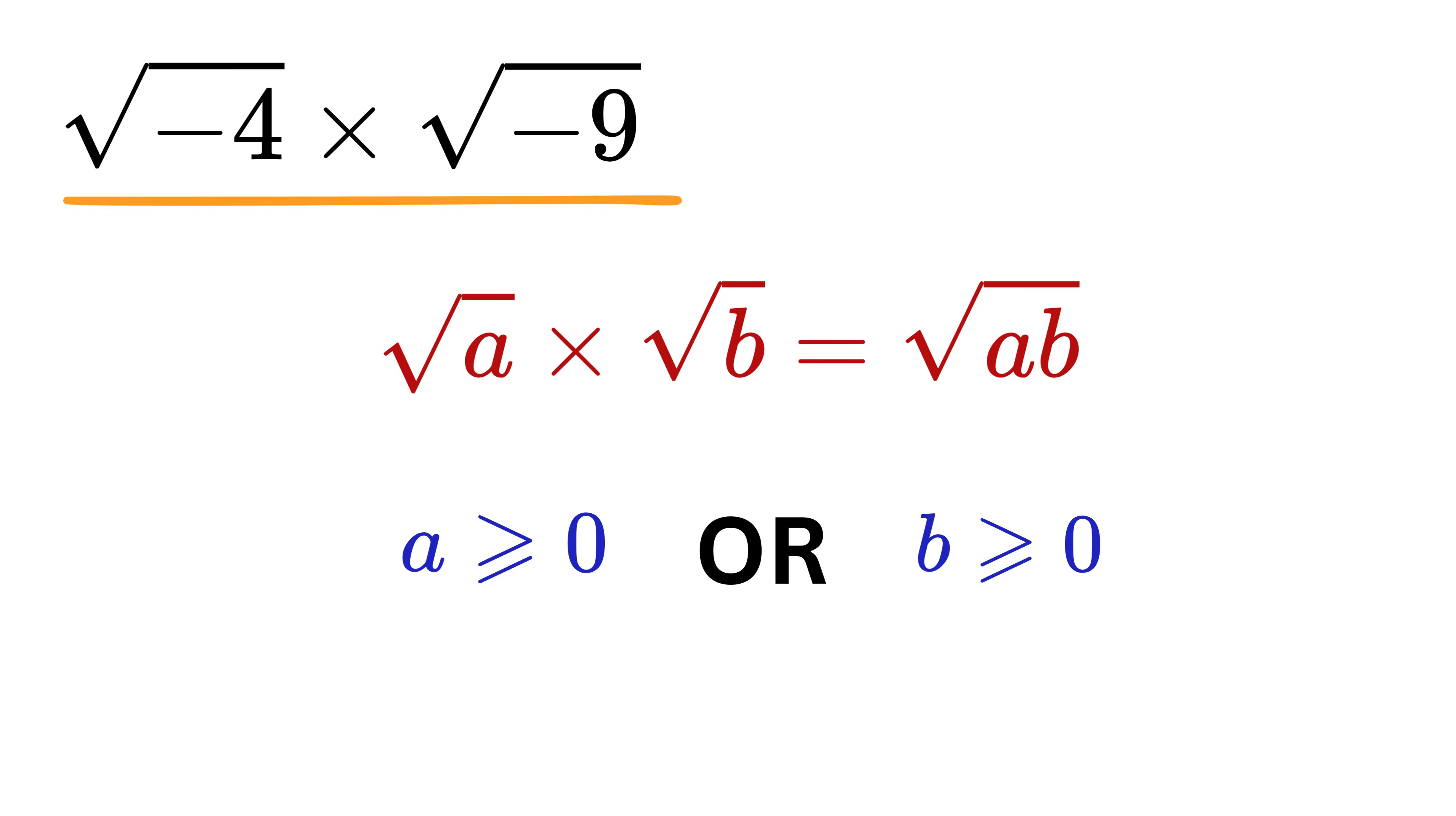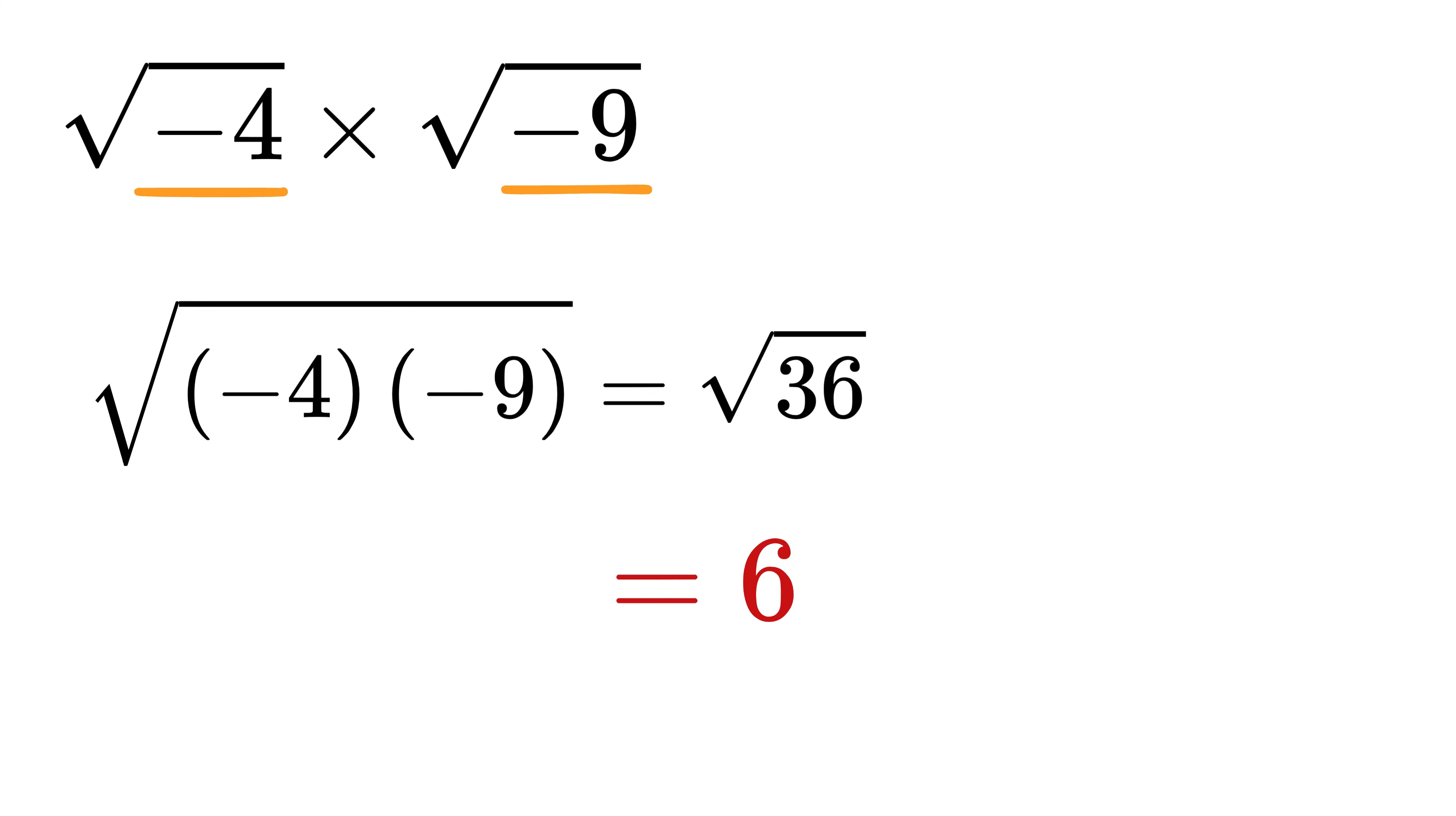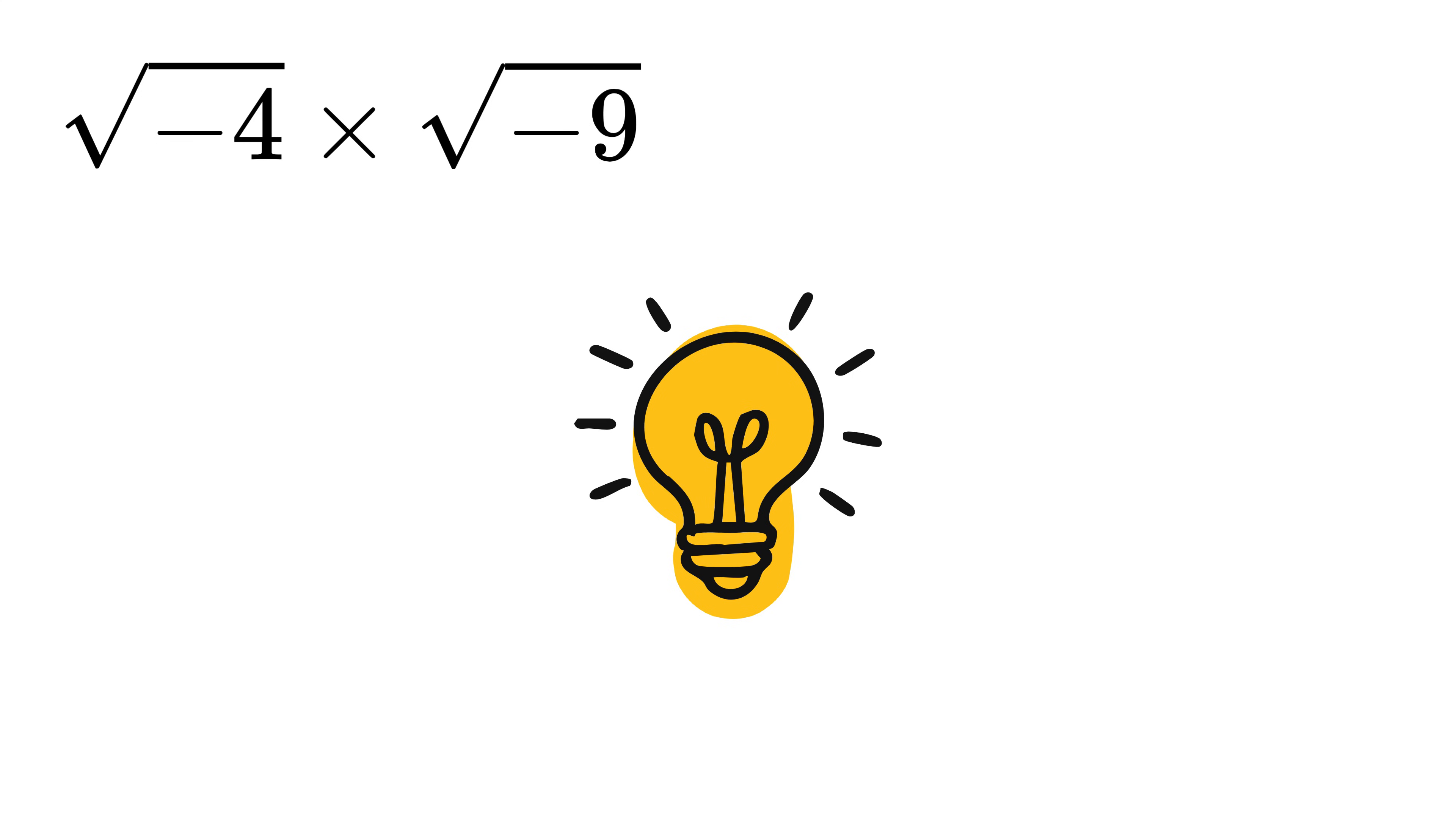In our problem, both minus 4 and minus 9 are negative, so applying the rule directly is not allowed. That is why the answer 6 is incorrect, even though it looks convincing. To solve this problem properly, we need a new idea.